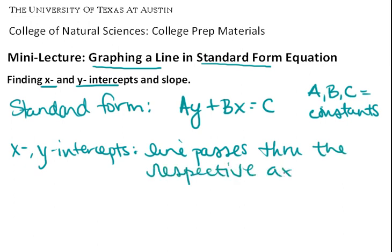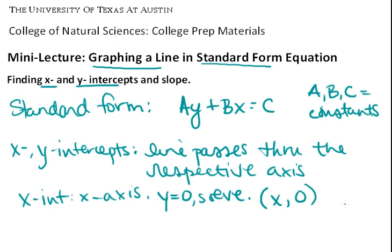For the x intercept, that's where the line goes through the x axis. If you wanted to find the x intercept, then you would let y equal 0 and solve for x. Your x intercept will have the form x, 0.